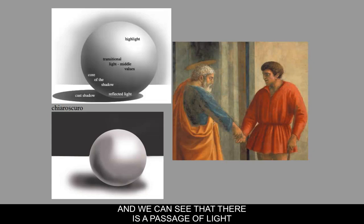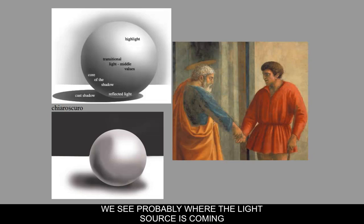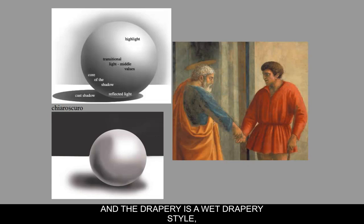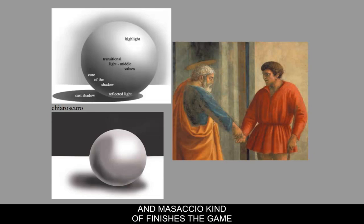We can see that there is a passage of light in Masaccio's image. In the upper right-hand corner, we see probably where the light source is coming from, because there are shadows on the left-hand side and the drapery is a wet-drapery style. Even the heads are kind of spheres that Masaccio is starting to understand in terms of light and shadow. Giotto started this with intuitive perspective, and Masaccio kind of finishes the game by using all of these elements.